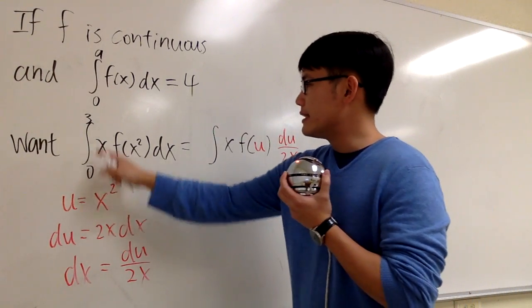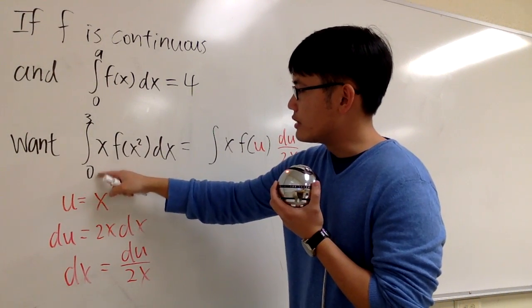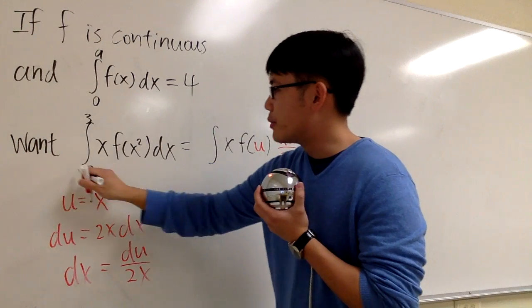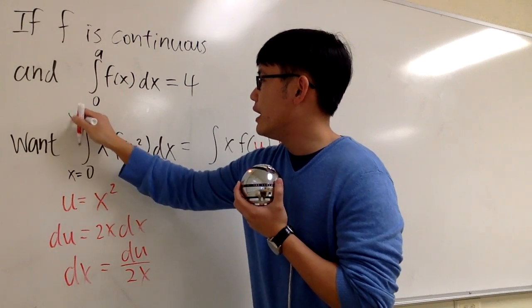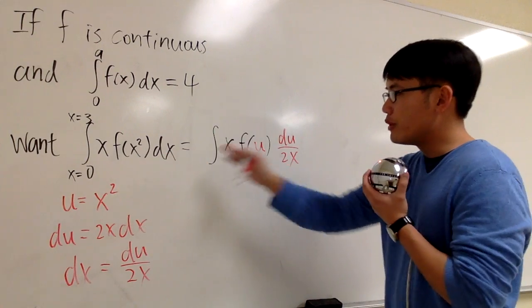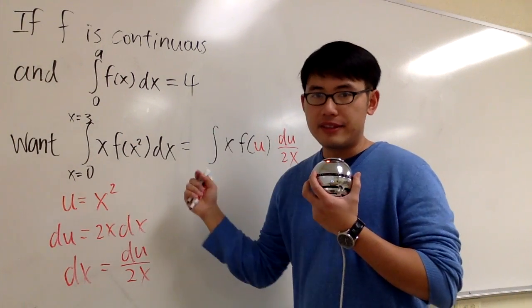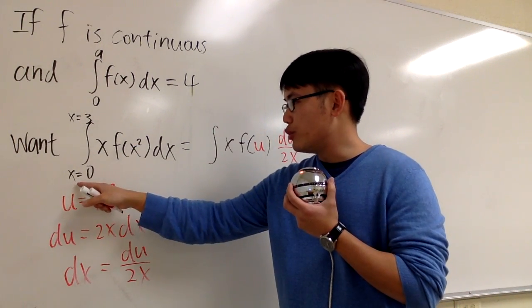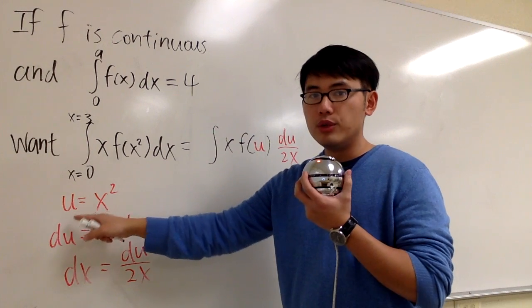How about for these numbers? Originally, it goes from 0 to 3, but these are the numbers in the x values. x equals 0 to x equals 3. When you take that integral into the u world, x are not invited. But we do know the connection between x and u: u equals x squared.